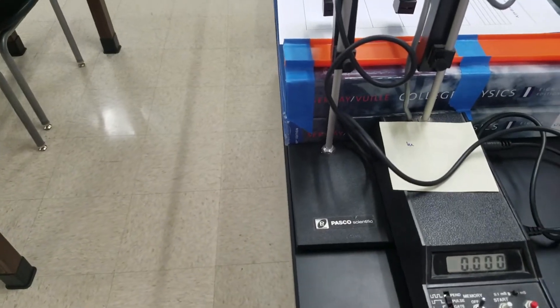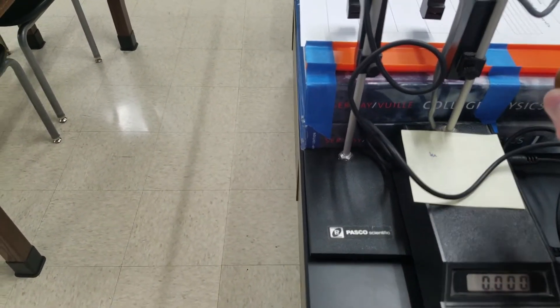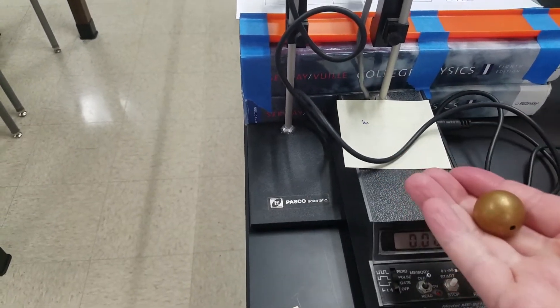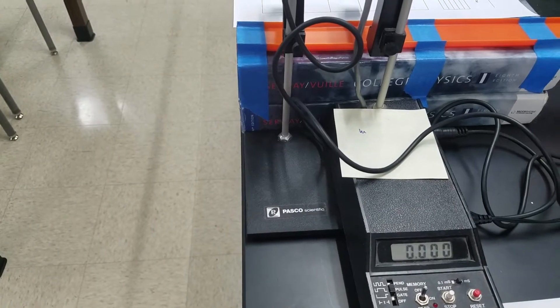So it will time how long it takes for this ball to go through there. So if we know the distance between the photo gates and the time between the photo gates we can get the velocity between the photo gates.